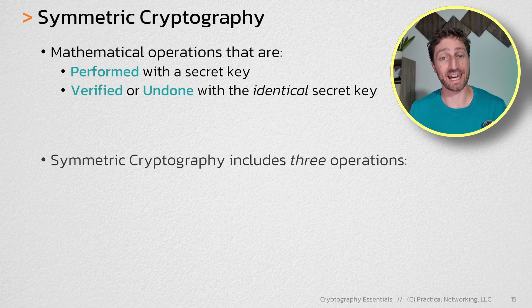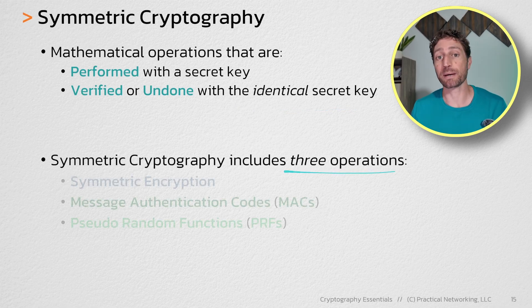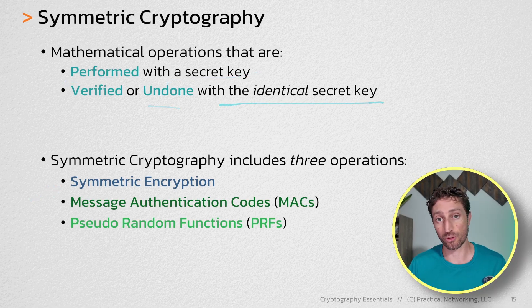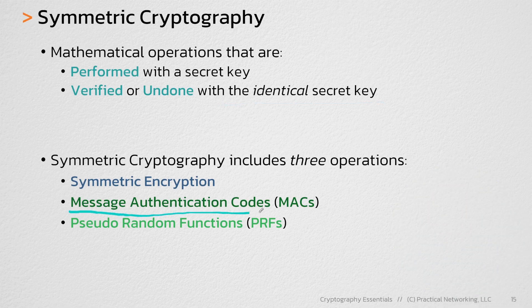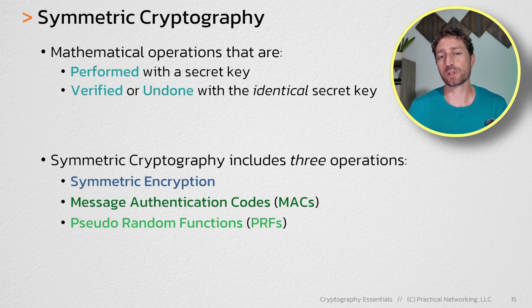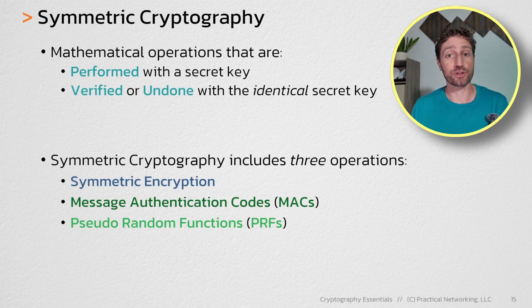Symmetric cryptography is a category, and it includes three types of operations. In the case of symmetric encryption, the encryption uses one key and undoing the encryption uses the same key, also known as decryption. In the case of message authentication codes and pseudorandom functions, both of those are performed with one key and verified with another key. With MACs and PRFs, you aren't really undoing the operation, but you are verifying that they were done correctly.